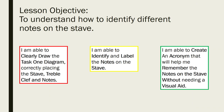For today's lesson, the lesson objective is to understand how to identify different notes on the stave. We've done a bit of this before, but we want to keep building on our understanding. So the red box on the left: at the least, today I am able to clearly draw the Task 1 diagram, correctly placing the stave, treble clef, and notes. We've looked into the stave, the treble clef, and the notes that go on the stave before, so at the very least you should be able to draw the diagram and correctly copy it out.